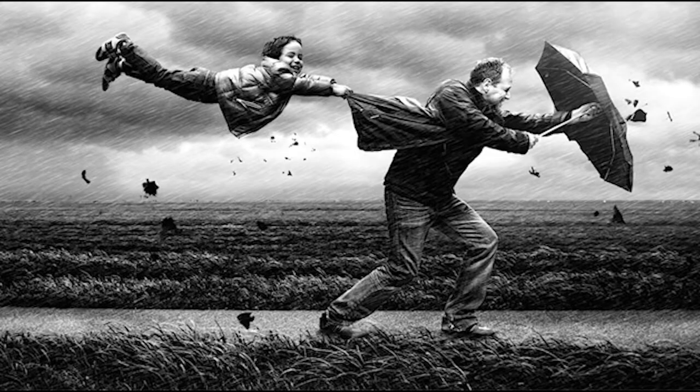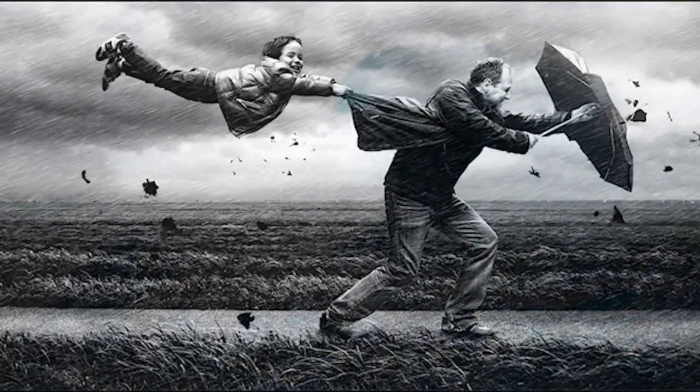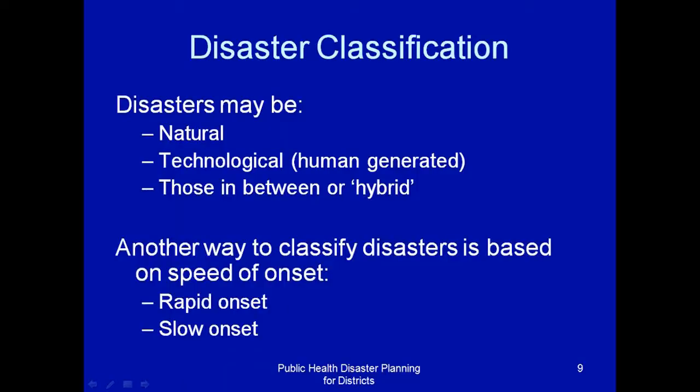We have wind, we have tsunami, we have avalanches. All these are rapid onset disasters.